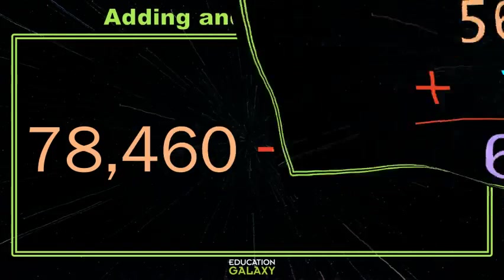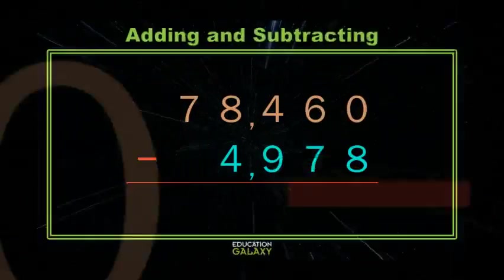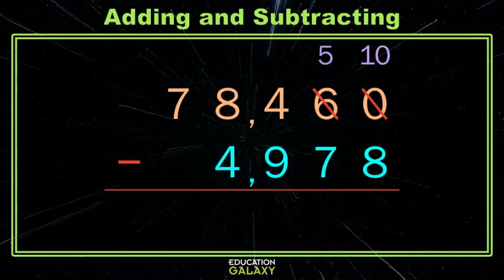Let's subtract. When we subtract multi-digit whole numbers, what's the first thing we do? If you said line up by place value, you are correct. Now, can we just start subtracting? No, because I can't take 8 away from 0, or 7 away from 6, or 9 away from 4, so we're gonna have to do a little redecorating here. In the tens place, we're gonna steal one of those and give 10 ones to the neighbors, and that'll drop me down to a 5 in the tens place.